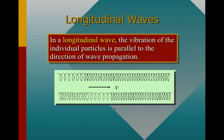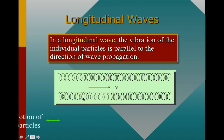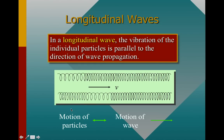Longitudinal waves, on the other hand, are like when we compress the slinky and then let go. We have the individual particles moving parallel to the direction of wave propagation. If you compress the slinky and then let it go, that compression travels down the length of the spring. Or if you stretch it and let go, that stretching moves down the length. Each individual particle moves side to side — back and forth — while the wave is still moving down the length. So the perpendicular thing doesn't happen here; we have parallel motion instead. That's a longitudinal wave.